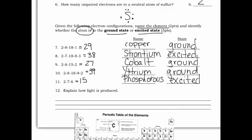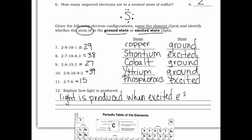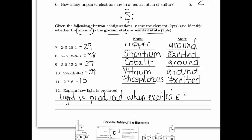The last question on the front: explain how light is produced. Light is produced when excited electrons fall back to the ground state — that's what happens to the energy released by those electrons.